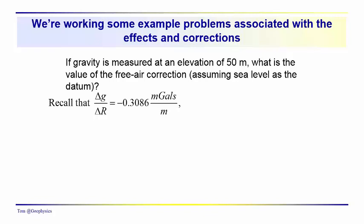We're continuing on. We're going to work through some simple problems just to illustrate some values that you might get for these effects corrections that we've been talking about. Let's take an example where we're at an elevation of 50 meters above our datum or above sea level, and ask ourselves what the value of the free air correction would be, just to get a feel for the scale of things.